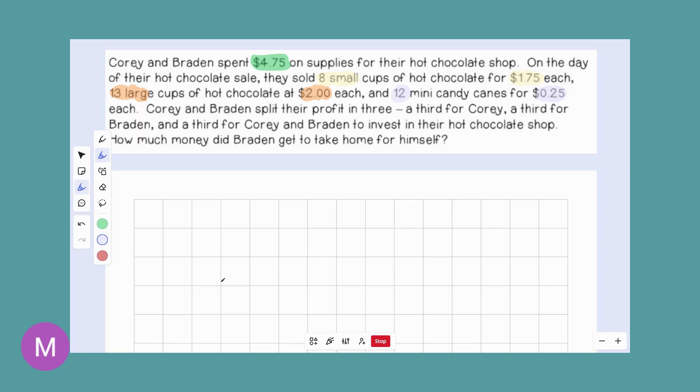Corey and Brayden split their profit into thirds, a third for Corey, a third for Brayden and a third for Corey and Brayden to invest in their chocolate shop later. So there's another clue. We have another number here and we're talking about thirds or splitting things into thirds. How much money did Brayden get to take home for himself? So we're looking for how much did one of those thirds end up being?